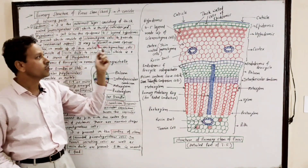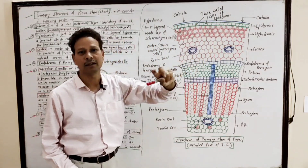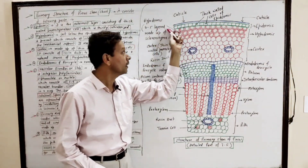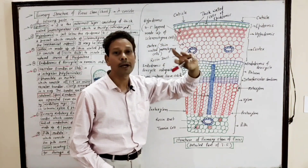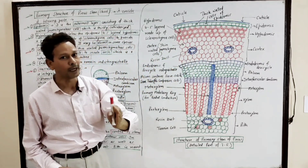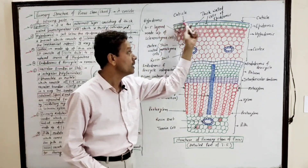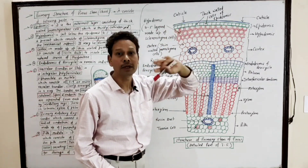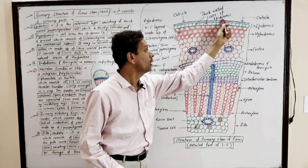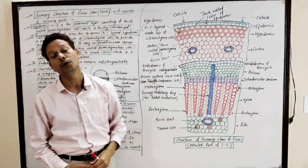Epidermis. Dear students, this outermost layer is made up of thick-walled parenchymatous cells. And this epidermis is well covered by a thick layer of cuticle.